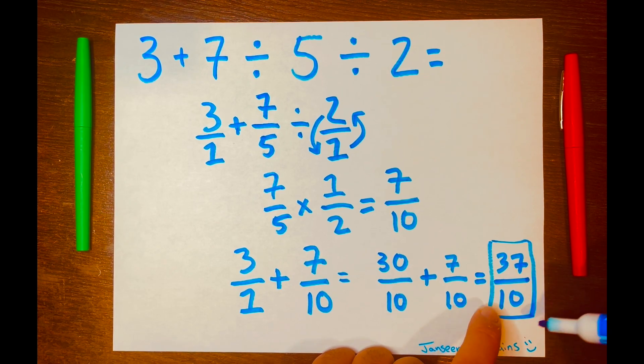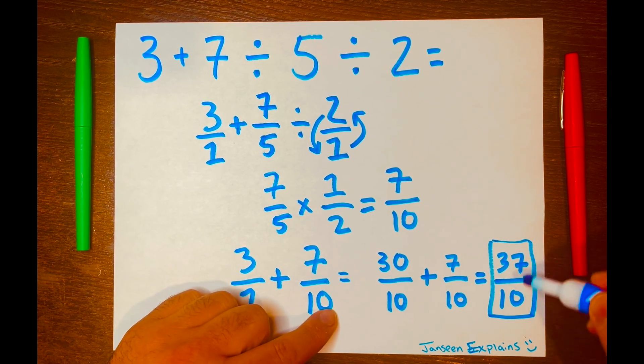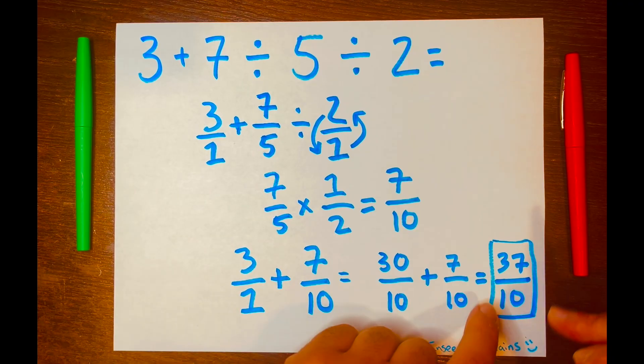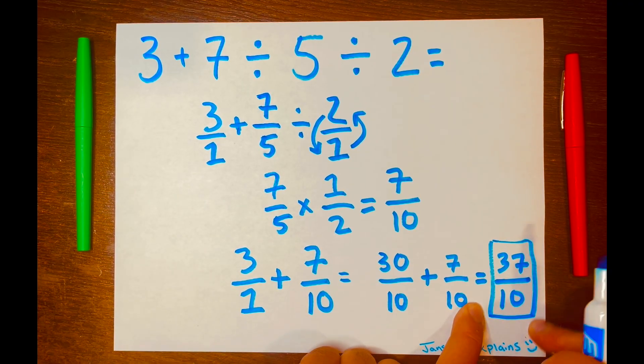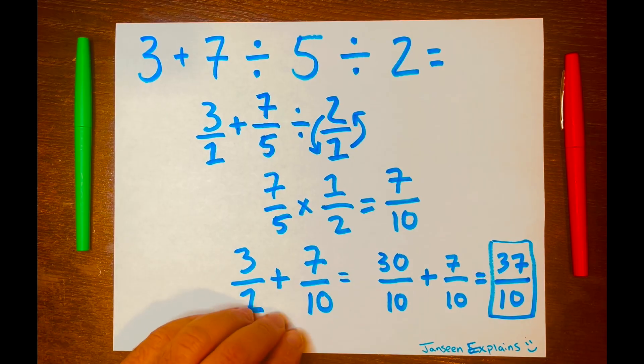37 over 10 is your answer. We can turn this into a mixed number, because it is an improper fraction. And we can get a decimal answer as well. So let's go ahead and do that.